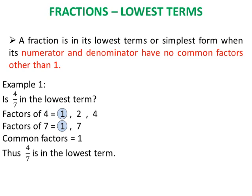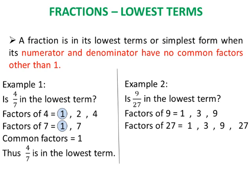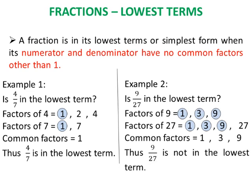Since the only common factor of 4 and 7 is 1, we say 4 by 7 is in its lowest term. Example 2: Is 9 upon 27 in its lowest term? Factors of 9 are 1, 3, and 9. Factors of 27 are 1, 3, 9, and 27. The common factors of 9 and 27 are 1, 3, and 9. Thus, 9 by 27 is not in its lowest term.